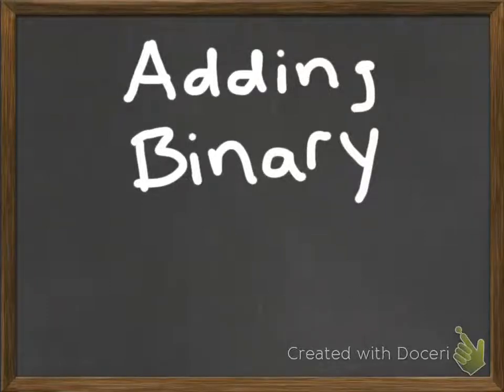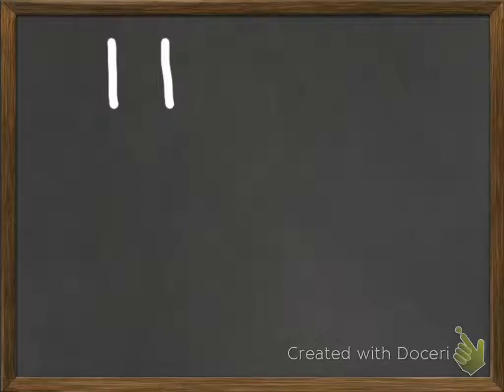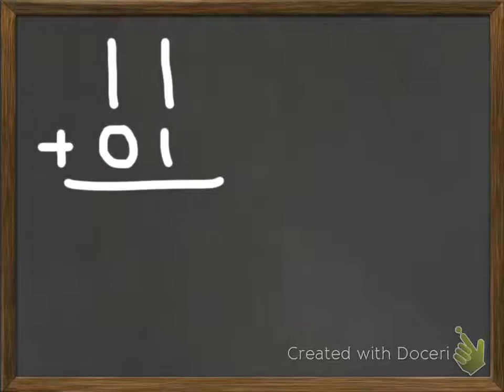In this video I want to go over adding binary. Adding binary is pretty simple and straightforward. Let's start off by looking at a simple example — let's say we're adding these two numbers: 11 and 01. You go about it in a similar fashion that you would for regular decimal numbers. You start in the ones place right here.